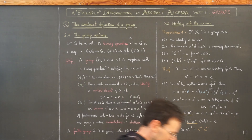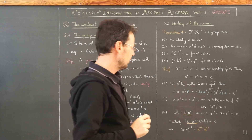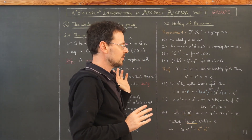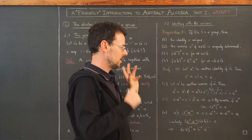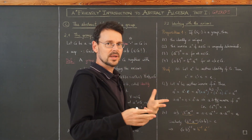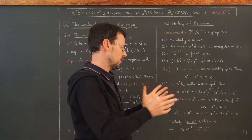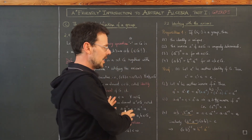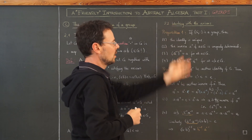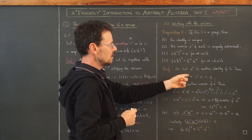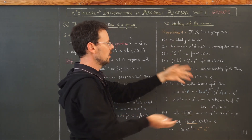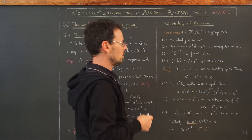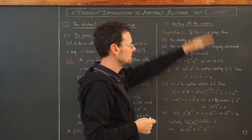That's it — this is our first proof using only the axioms, not anything learned in high school about the real numbers. We simply used three axioms and reduced all these properties to the axioms, seeing that they hold true.